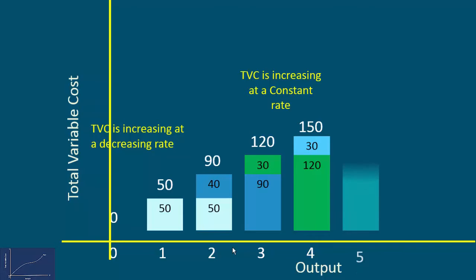The total variable cost of 5 units is 190 rupees. The rate of increase is 190 minus 150, 40 rupees.